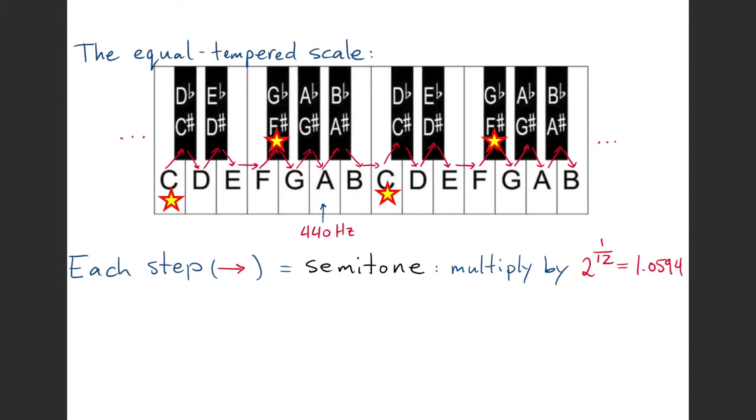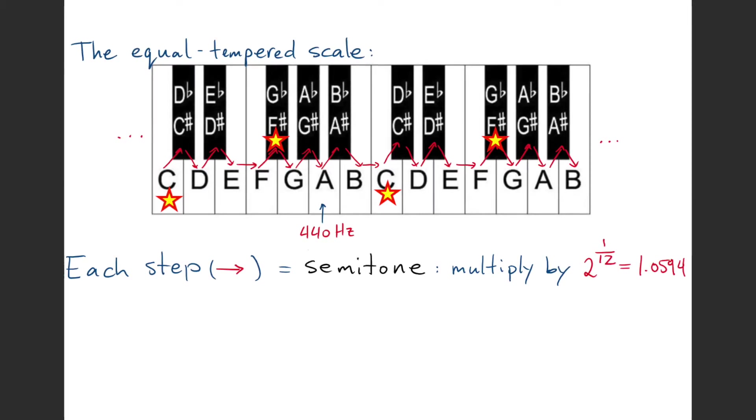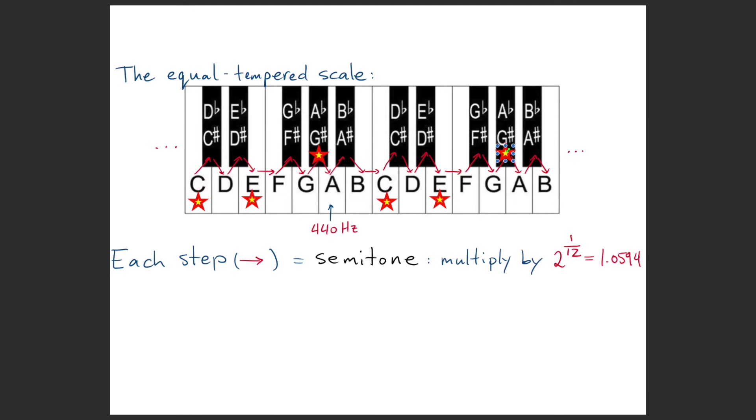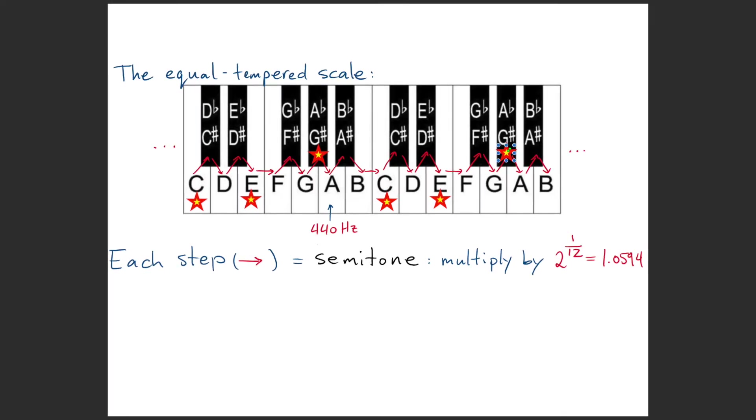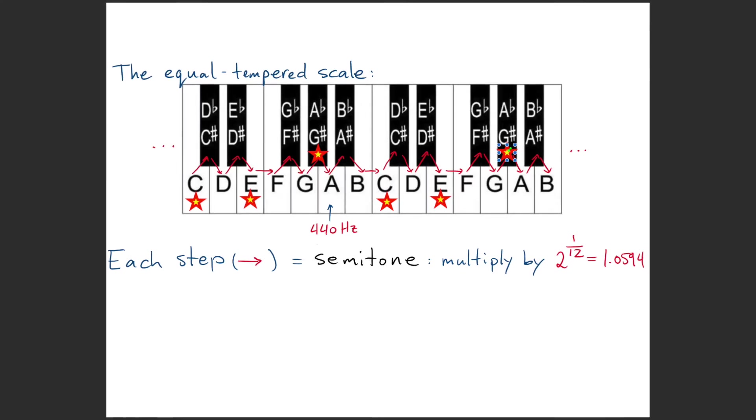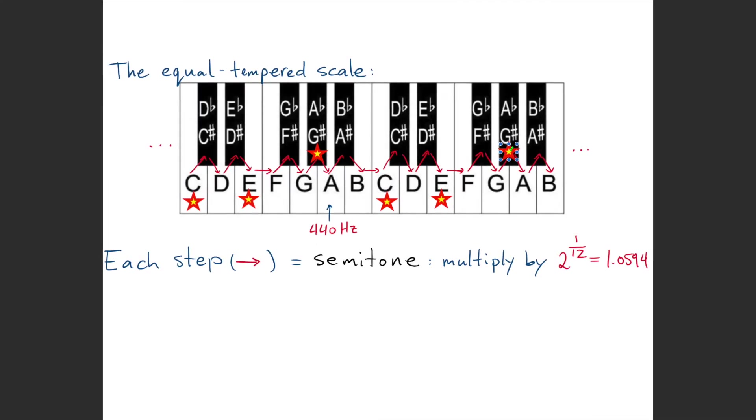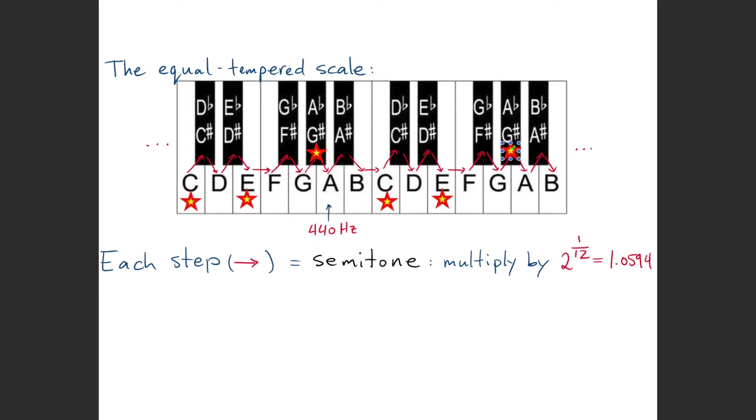That would be dividing up the octave into two equal parts. If we divide up the octave into three equal parts, that means you get major third, major third, major third. Okay, so that's a combination of notes that would form an augmented chord.